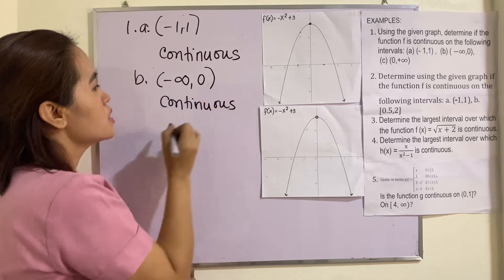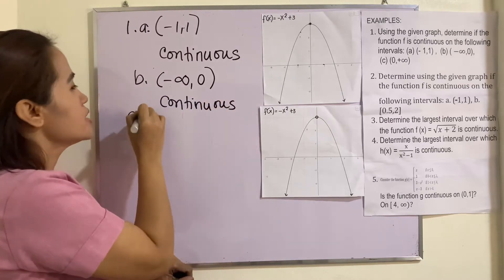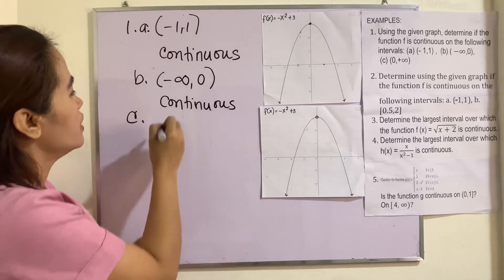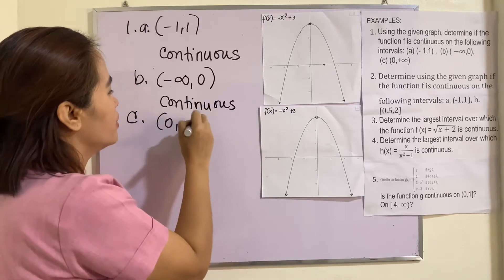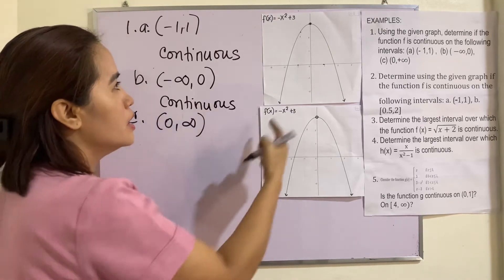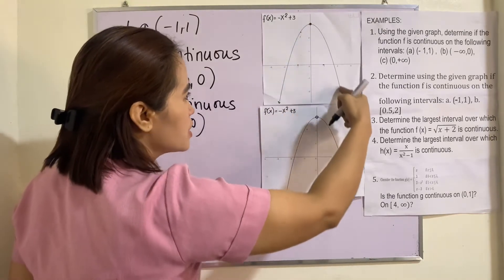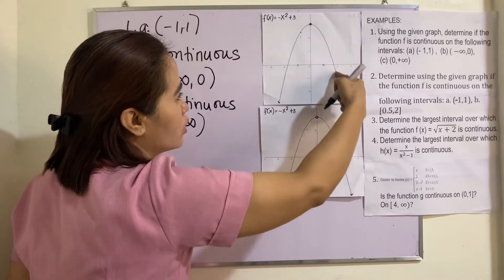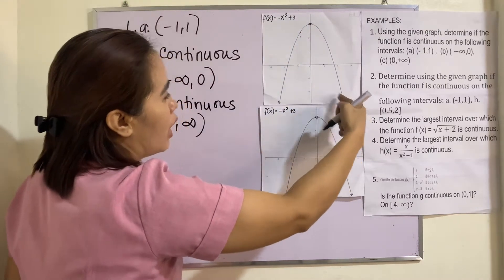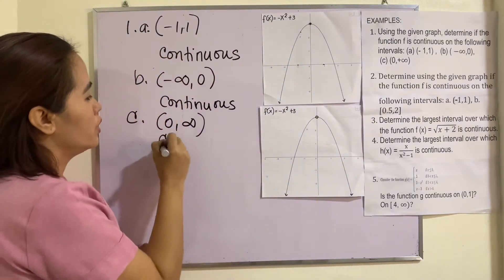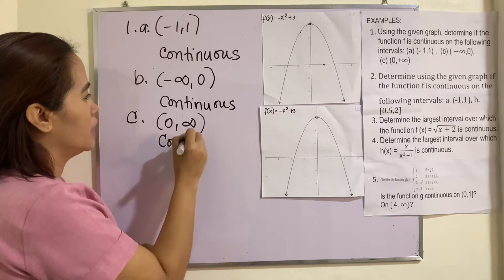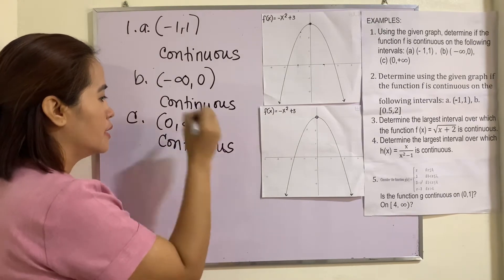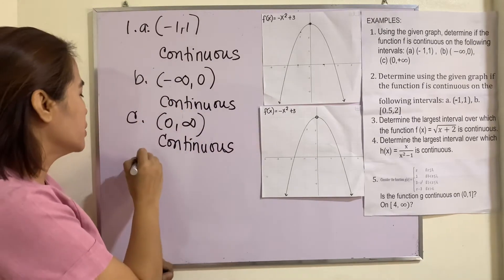C: 0 to positive infinity. This one is 0 up to positive infinity. Again, we can trace the graph without lifting our pen. So therefore, this one is continuous at this interval.